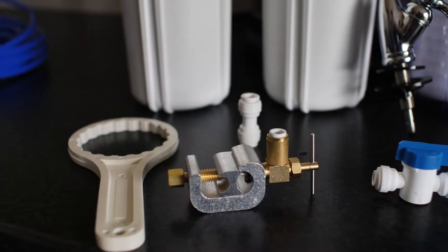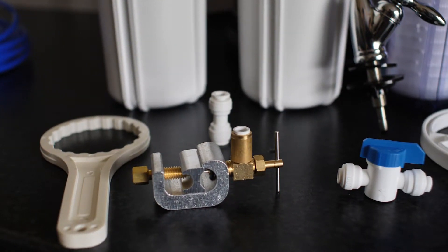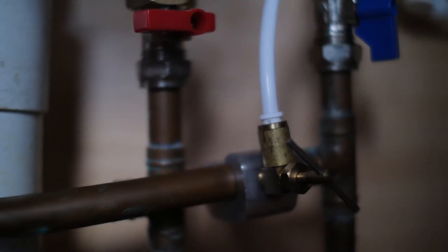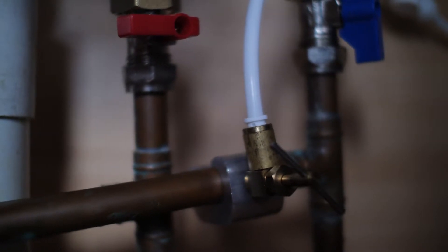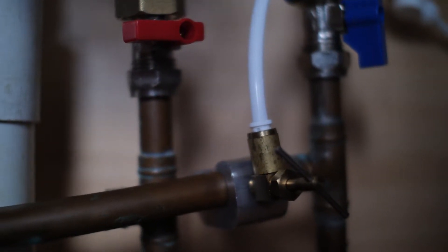You can see now this is a saddle valve. This clamps around the existing 15mm copper pipe, pierces a hole into the pipe, allowing the water to run off and divert off to the filter.